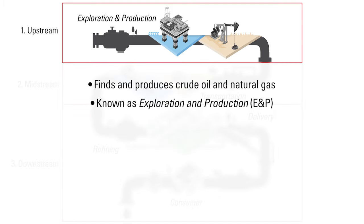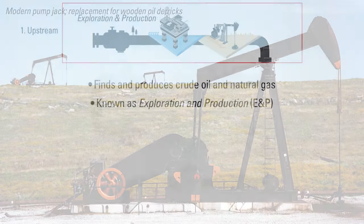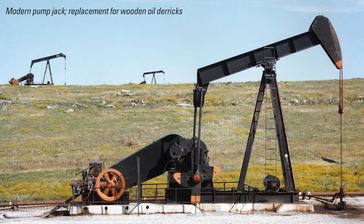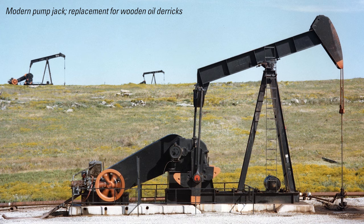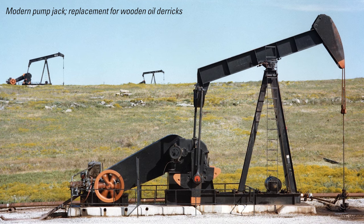The upstream industry finds and produces crude oil and natural gas. The upstream is sometimes known as the exploration and production sector, or E&P. Today there are several ways that an E&P company artificially lifts the resources to the surface. A modern version of the wooden derrick that we saw earlier is represented here in this photograph.